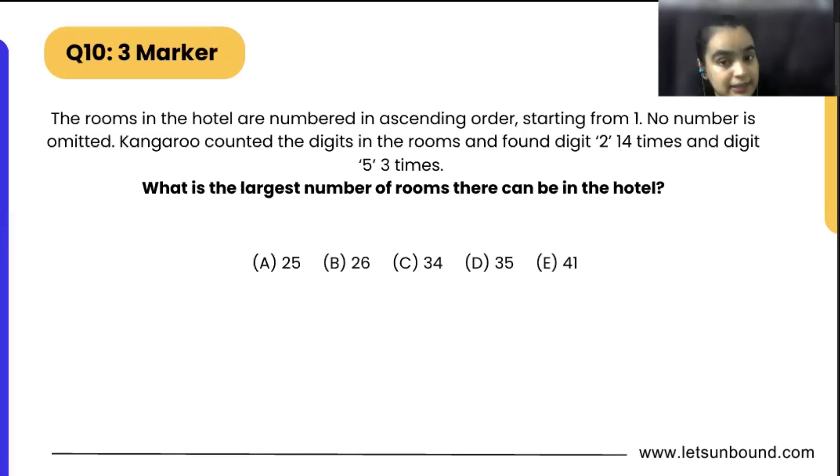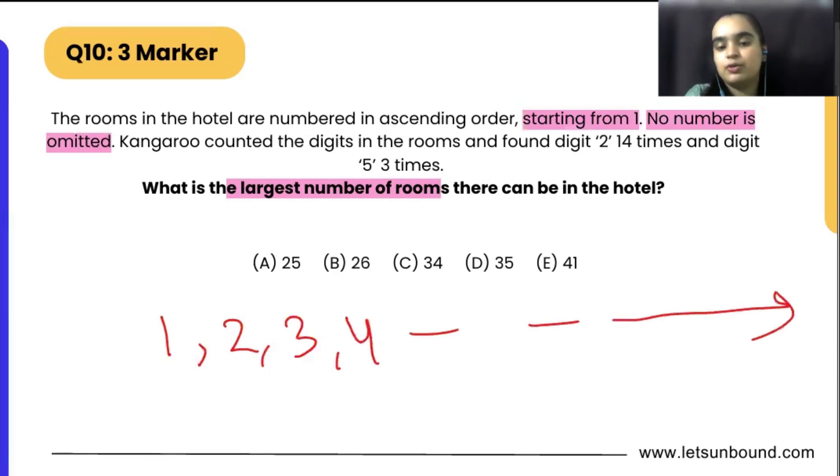And found digit 2 fourteen times and digit 5 three times. What is the largest number of rooms there can be in the hotel? First of all, we got to know that no number is omitted and the rooms are starting from number 1. So it will be 1, 2, 3, 4 and so on. We don't know the count.